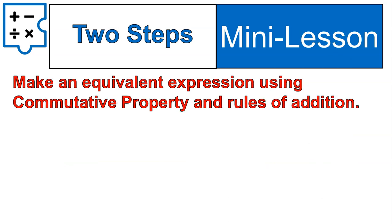So we are going to make equivalent expressions using that commutative property, and then we're going to manipulate those expressions using the rules of addition. This is our two-step process that will make these expressions a little bit easier to deal with.